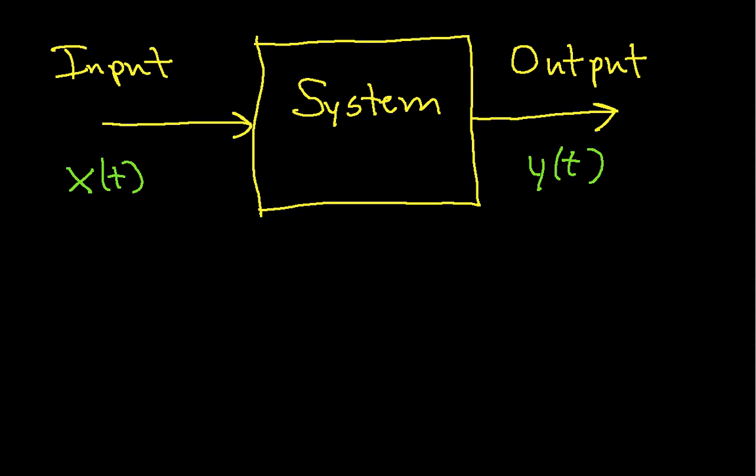So we've drawn a system. It has inputs and outputs, or an input and an output. And we'll spend some time talking about the different characteristics you can look at.